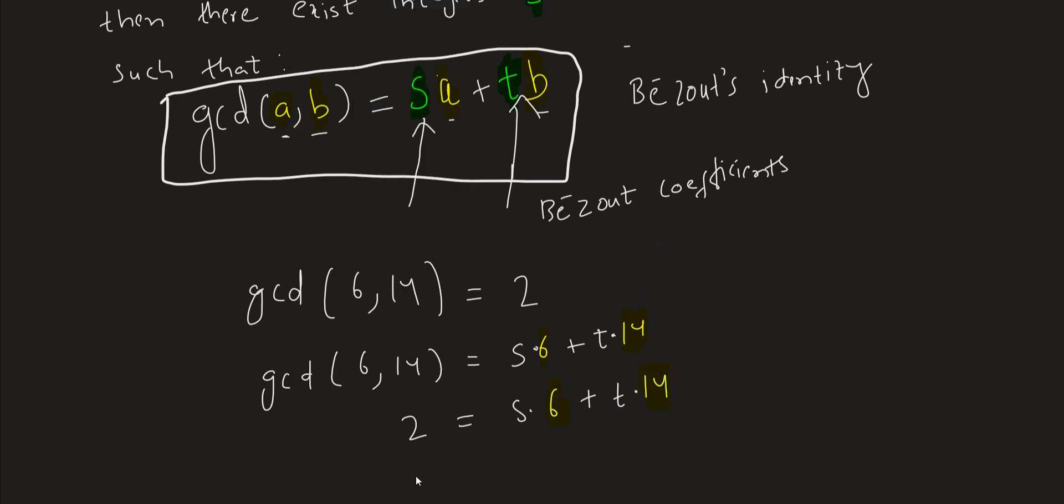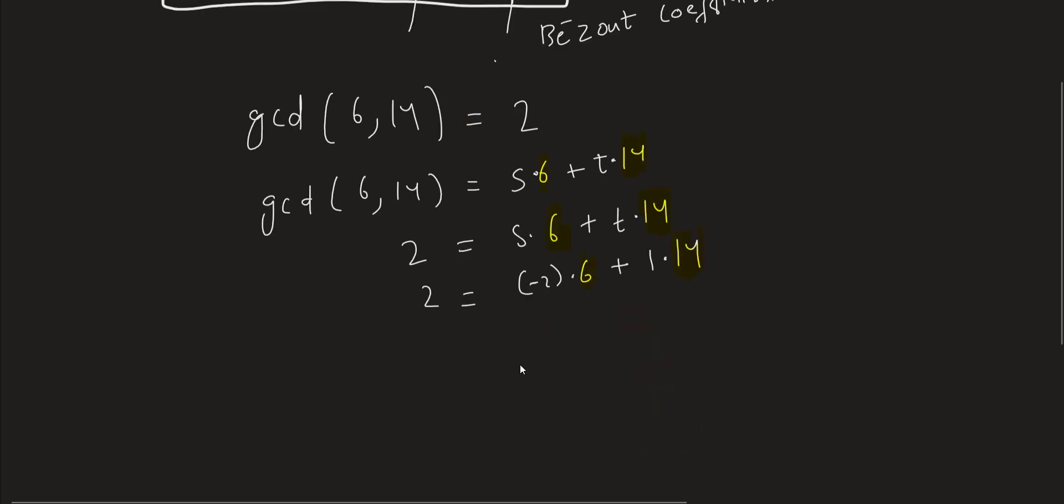The values that we obtain are 2 is equal to s times 6 plus t times 14. So what we obtain is s is equal to minus 2 and t is equal to 1.